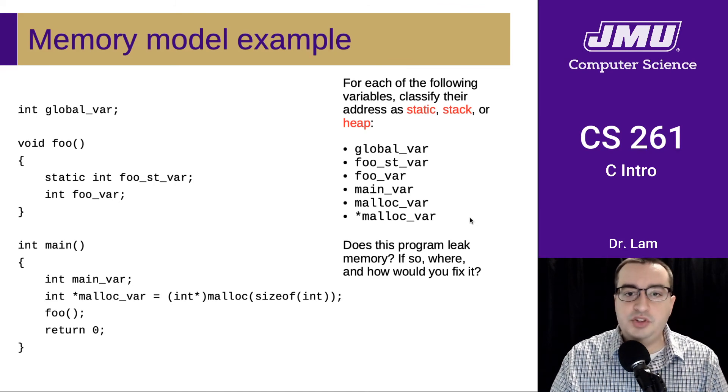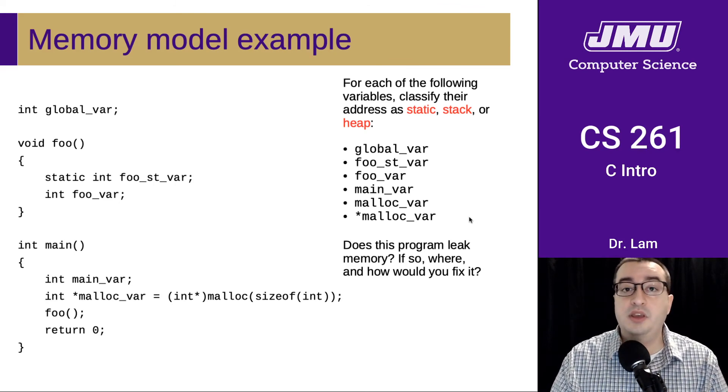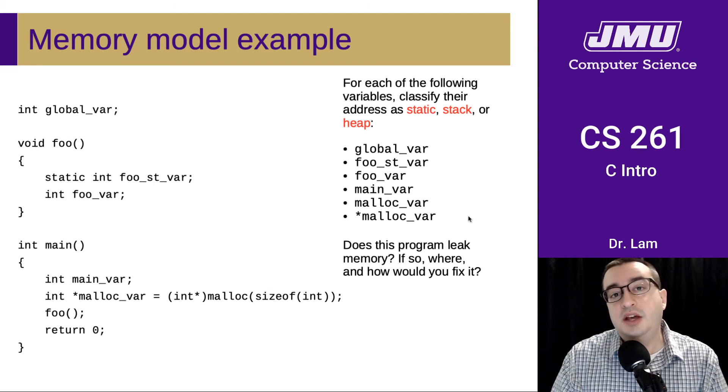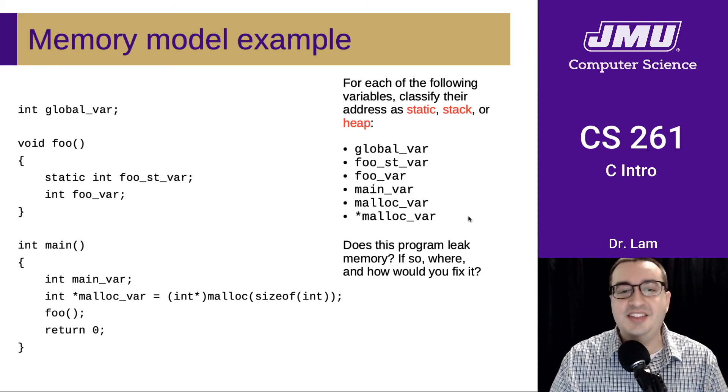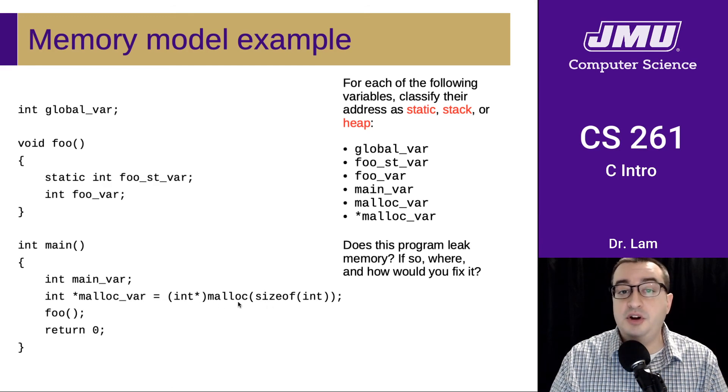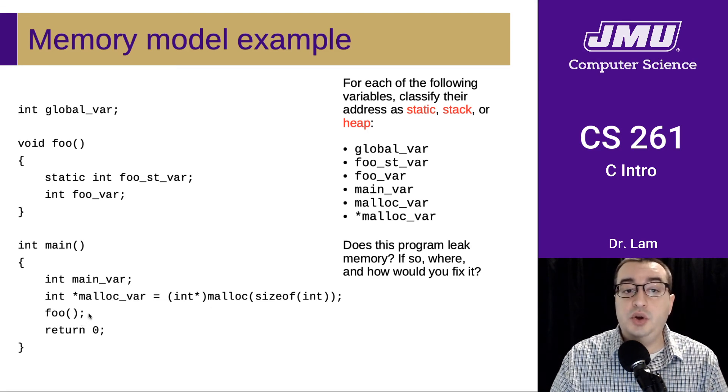So the last question here is, does this program leak memory? So take a second and think about that. And hopefully it's relatively easy to see in this example that even though we malloc some memory here, we never actually free it. There's no place in this program, at least as written, that frees the memory allocated here. So we do have a memory leak here. In order to fix this problem, we would need to insert a call to free somewhere here and we would need to pass it malloc_var in order to undo the malloc that has happened here.